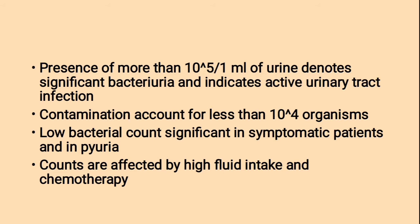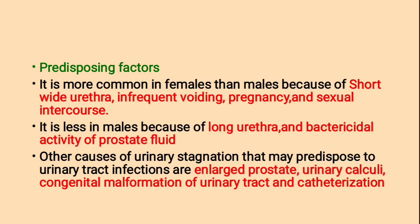Bacteriuria means presence of bacteria in urine and indicates active urinary tract infection. Contamination accounts for less than 10⁴ organisms. Low bacterial count is significant in symptomatic patients and pyuria — pyuria means presence of pus in urine by bacterial infection. The counts are affected by high fluid intake and chemotherapy. UTI is more common in females than males because of short wide urethra, infrequent voiding, pregnancy and sexual intercourse.